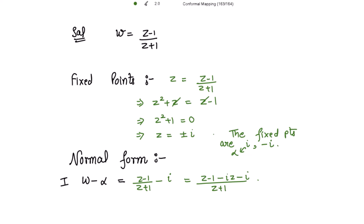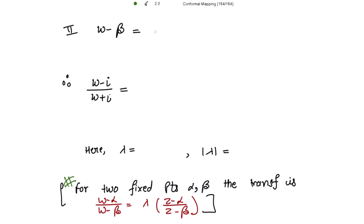And then we have to subtract the other fixed point, that is beta, which is minus iota, from the given transformation. So w minus beta is z minus 1 over z plus 1 minus of minus iota, that is plus iota. This is equal to z minus 1 plus iota z plus iota over z plus 1.